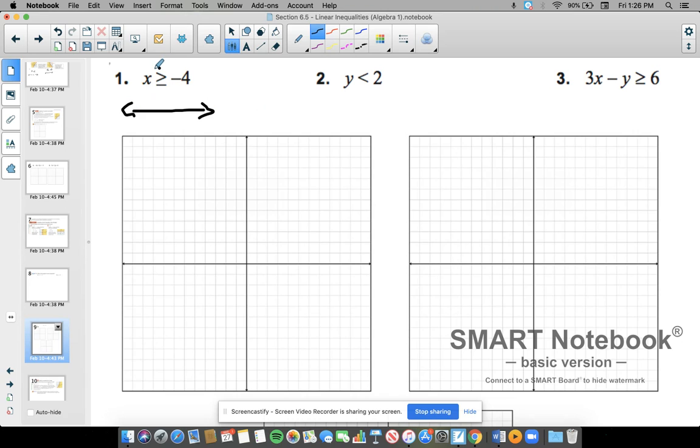Now when you go to graph it, it's actually pretty easy. All you're going to do is change out this sign with an equal sign. So I'm going to do x equals negative four. So we do have to go back a chapter and remember how to graph things. These are our special cases, the ones we're going to do here, where you're going to graph the line.